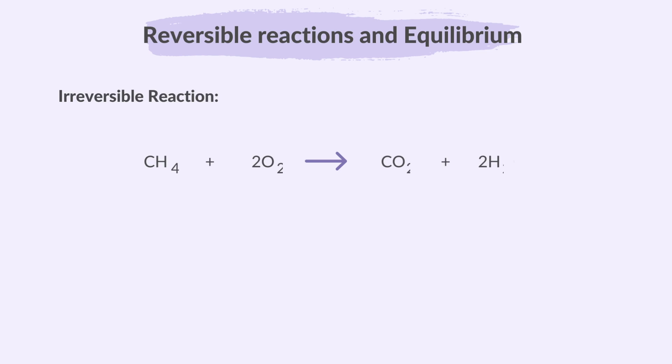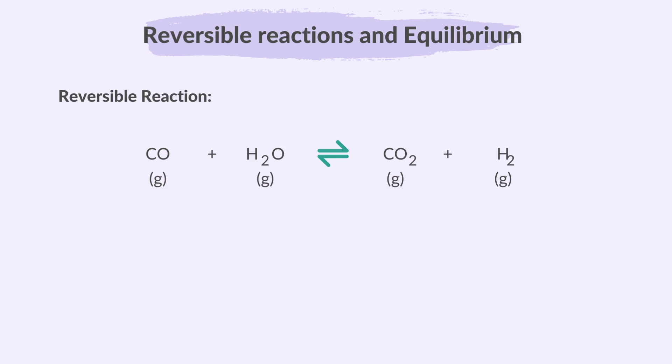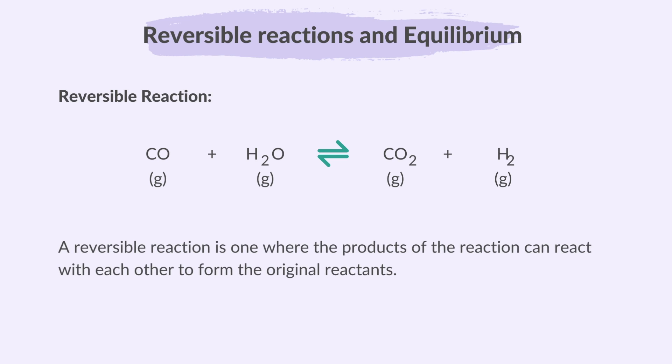In some reactions, the reactants are completely converted to products and then the reaction is just over. These are called Irreversible Reactions. On the other hand, some reactions can go backward, meaning the products can turn back into the original reactants. These are reversible reactions — ones where the products of the reaction can react with each other to form the original reactants.